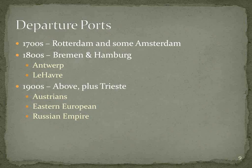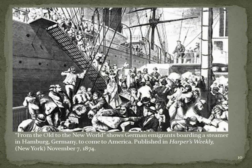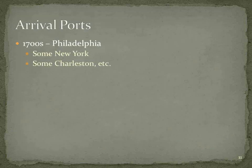Most of us start looking at arrival ports. In the 1700s, they primarily arrived in Philadelphia. I mentioned the 1710 contingent that sailed into New York, but most of them were coming into Philadelphia. A few settled down in Charleston, South Carolina, and a few other areas. But the vast majority in the 1700s came to Philadelphia.